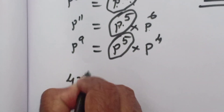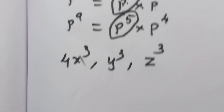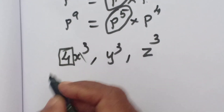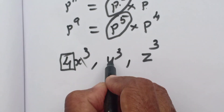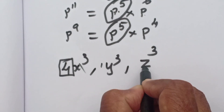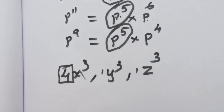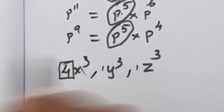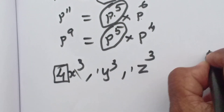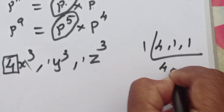Next: x cube, y cube, z cube. If you want to give p to the power of 9, p to the power of 7, p to the power of 5 — the lowest power, p to the power of 5, is the GCD. Similarly for q to the power of 4, q to the power of 6.